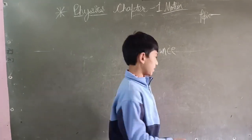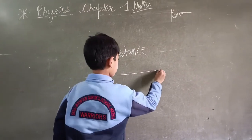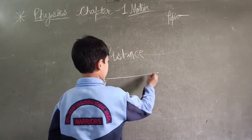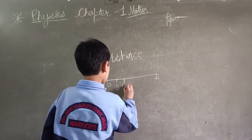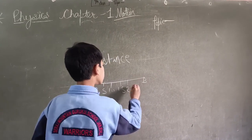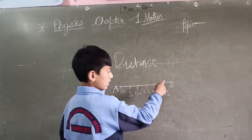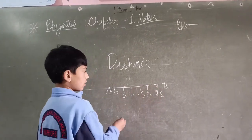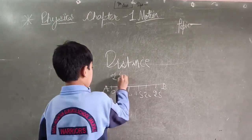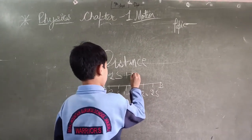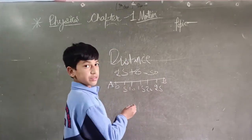Now I will take an example. When we go here to here, I will come again back. So our distance is 50 meters. The unit of distance is metre.